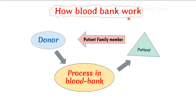Now, how does a blood bank work? A patient needs blood, so a family member acts as a donor and donates blood to the blood bank. In other cases, such as leukemia or blood donation camps, voluntary donors donate blood for mankind, not for any personal purpose. In the blood bank, we check and process the blood, then finally transfuse it to the patient.